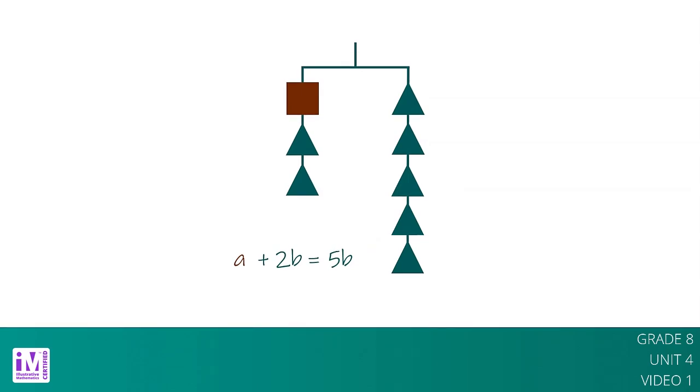If we have a balanced hanger and add or remove the same amount of weight from each side, the result will still be in balance. Let's remove two triangles from each side. The resulting equation is A equals 3b.